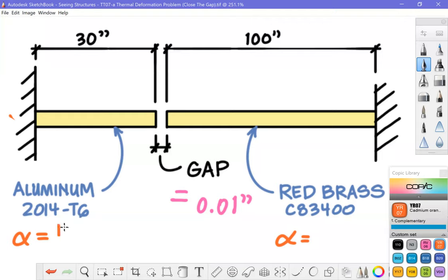I've gone ahead and looked up these properties so let's add this information in. The coefficient of thermal expansion and contraction for 2014-T6 aluminum is 12.8 E-6, that is strain per degrees Fahrenheit